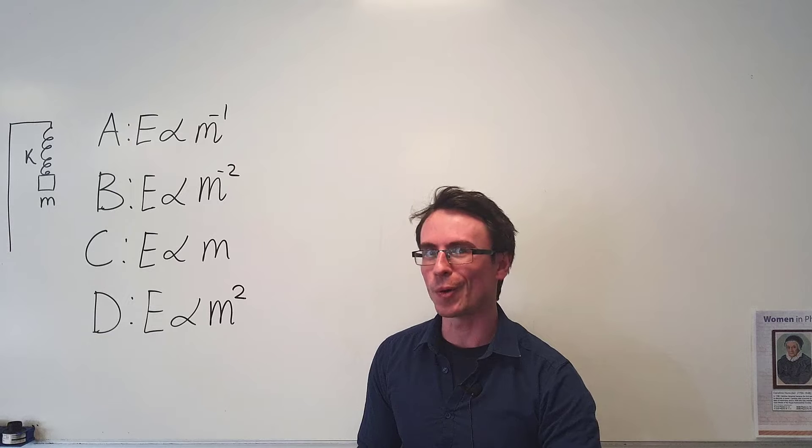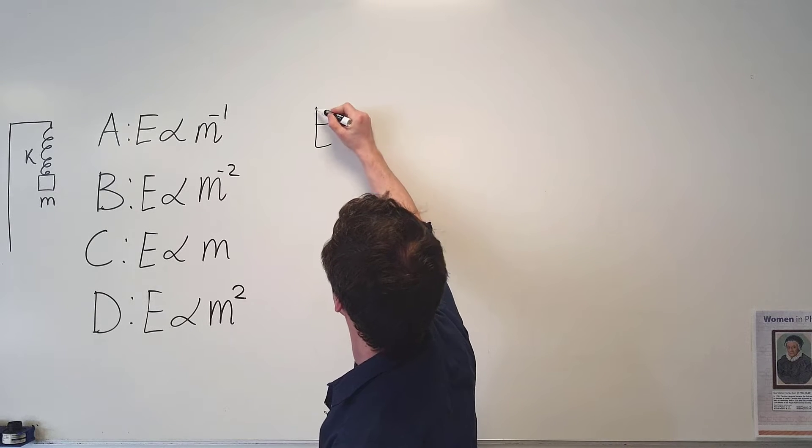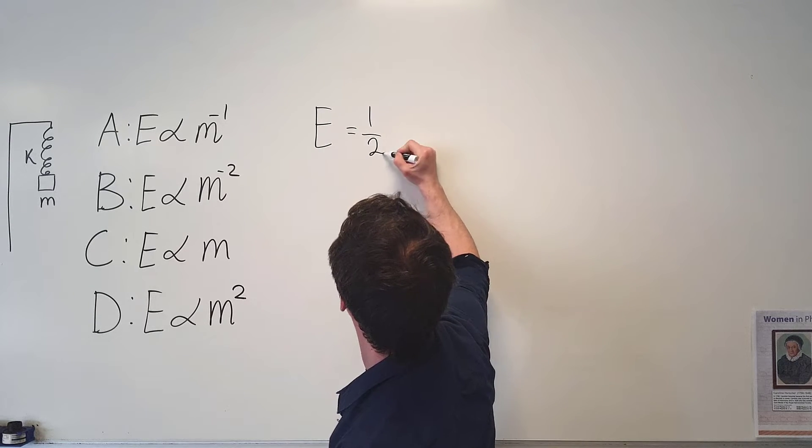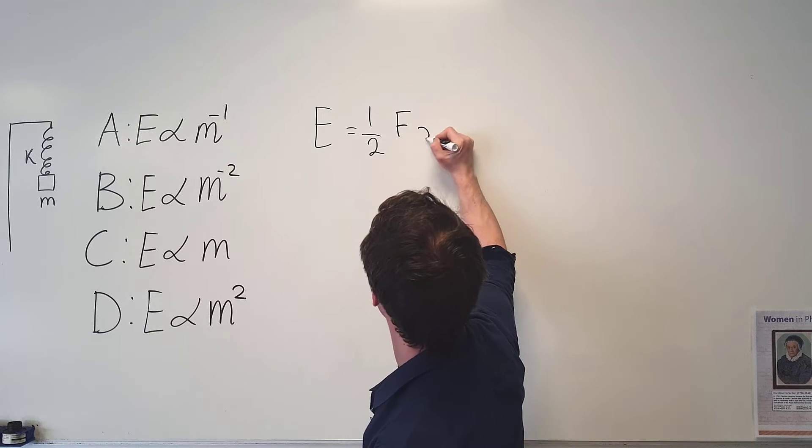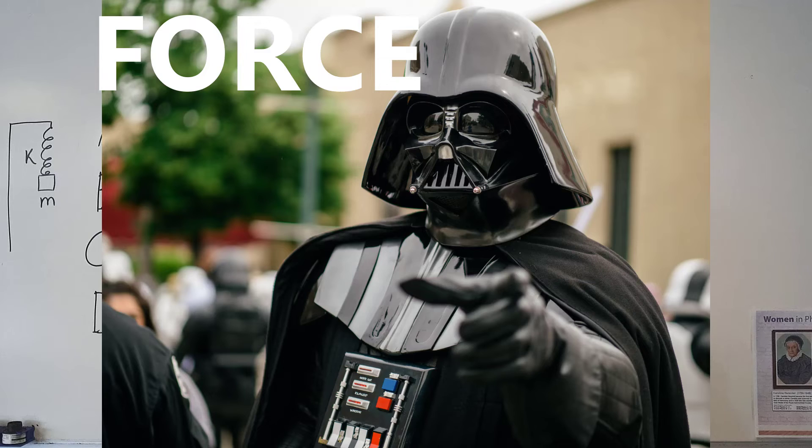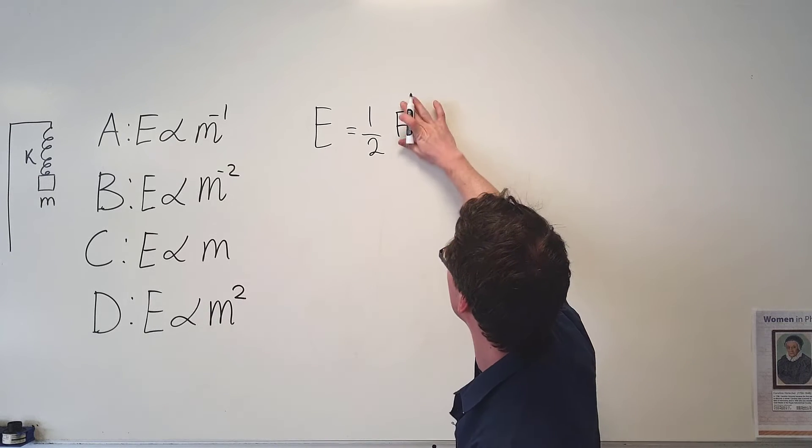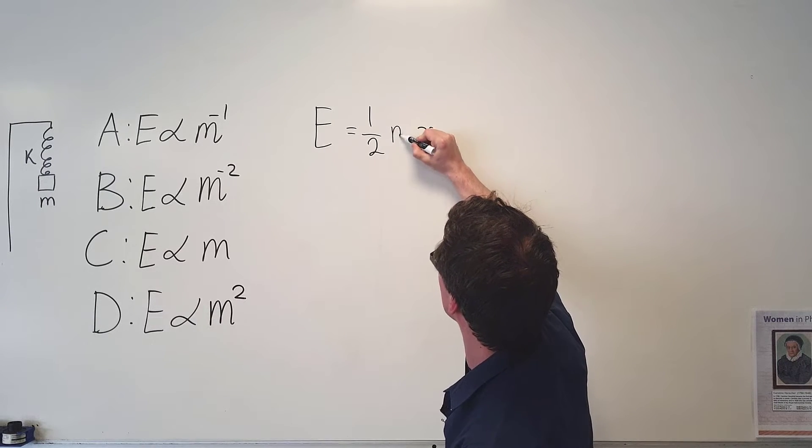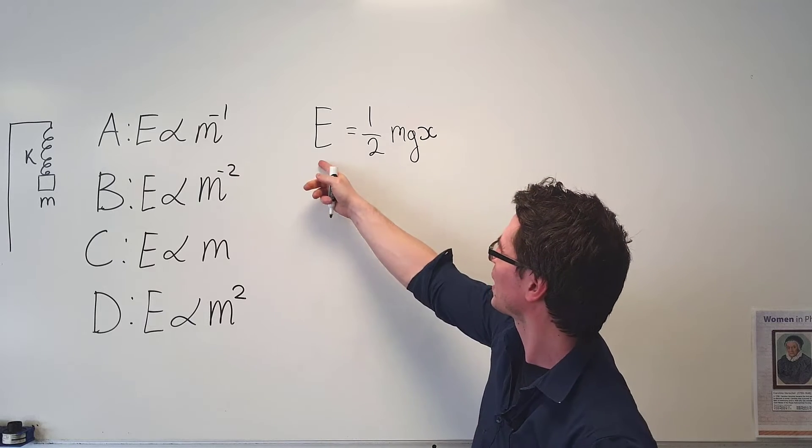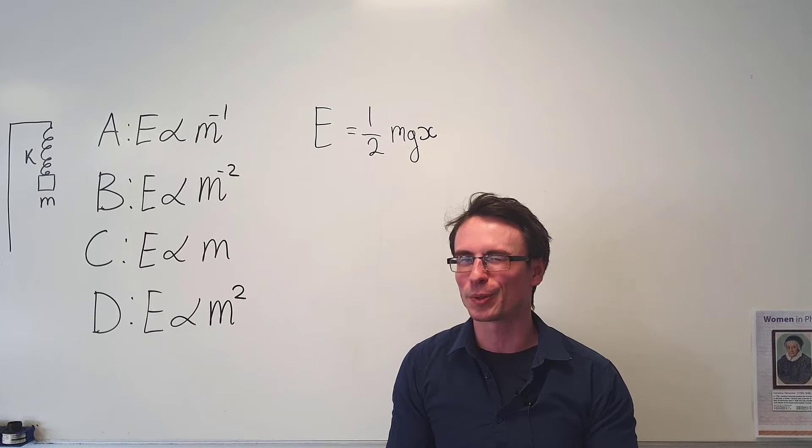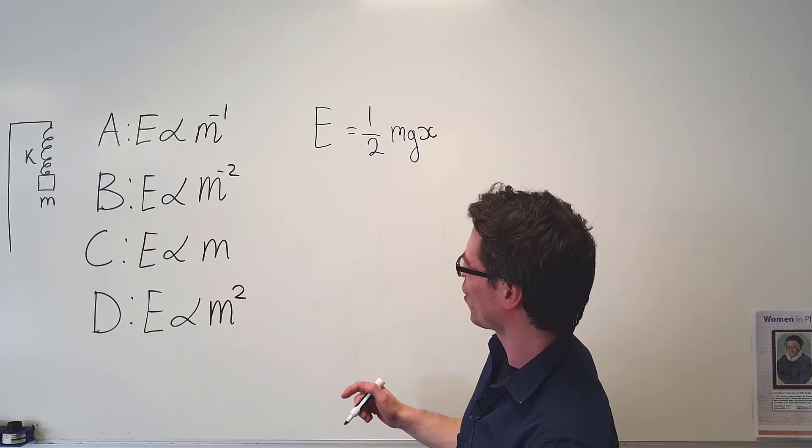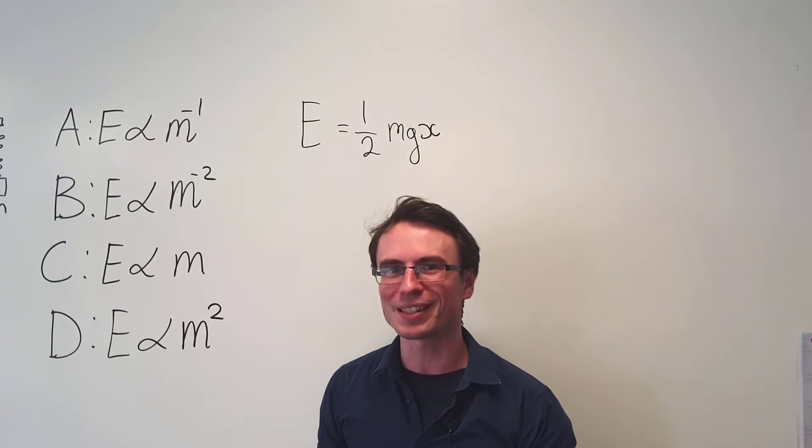This seems like an easy one, or is it? The elastic potential energy of a spring is equal to a half Fx, where F is the force. In this case, we only have one force acting straight downward, which is the weight. So rather than the force, I can just write Mg, meaning that E should be directly proportional to M. Therefore, the correct answer should be C, right?